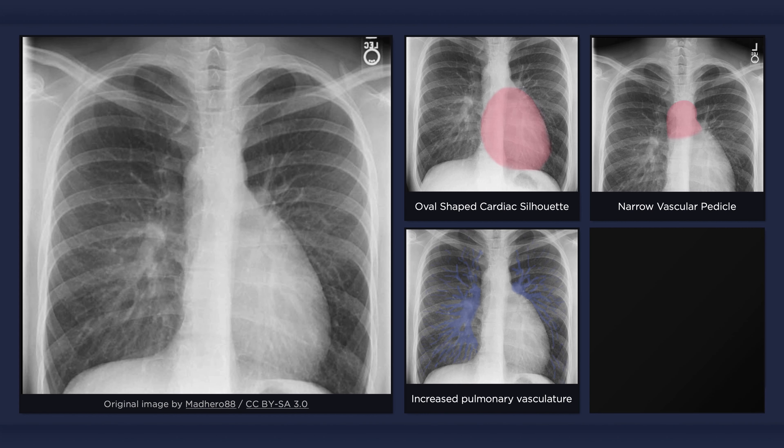Over-circulation of pulmonary blood flow results in a third finding, represented on plain radiography as an increase in vascular lung markings.